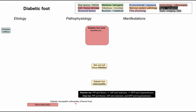Let's start with the etiology. As the name implies, this all starts with diabetes mellitus, which causes many metabolic and biochemical changes in your body. Some of those changes, by definition, is chronic hyperglycemia, and this has a number of downstream effects.